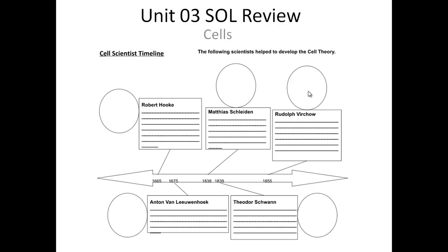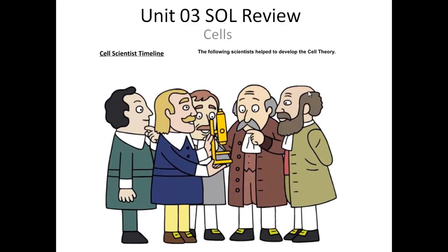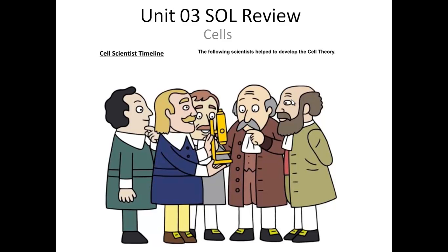So how did the cell theory come in? The old cell theory was stated by Schwann. He comes up with: all organisms are made of one or more cells — so we have single-celled and multi-celled creatures. Cells are the basic building blocks of all life — you've got to have cells to be alive. And then Virchow comes in and says all cells come from existing cells. That's the old view.